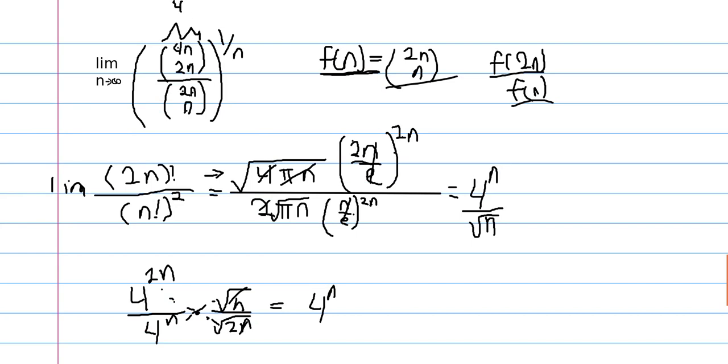So 4 to the n, as we take the power of 1 over n, we get 4 to the n over n, which is equal to 4.